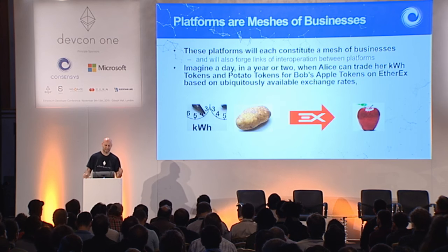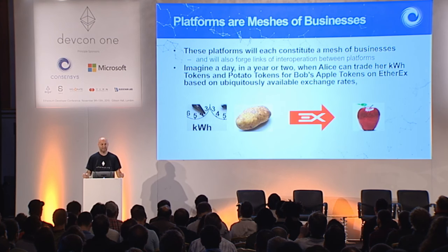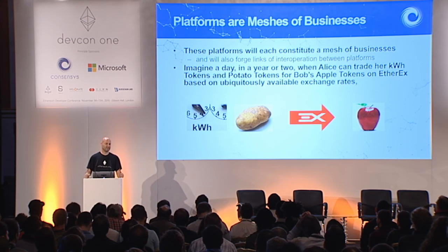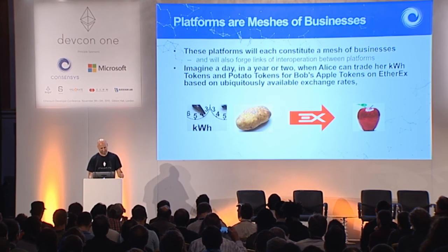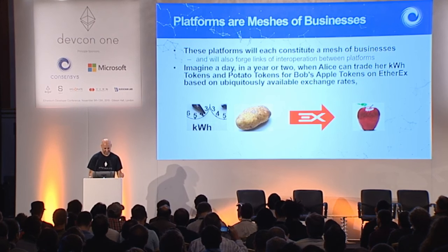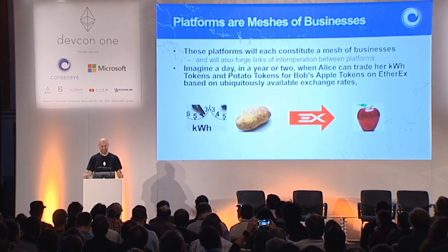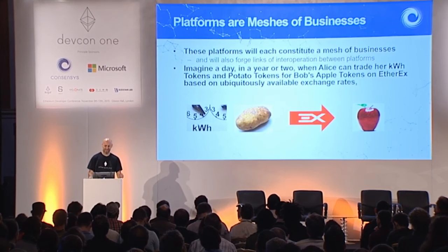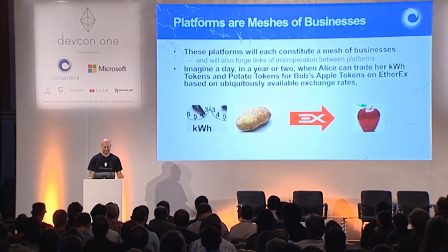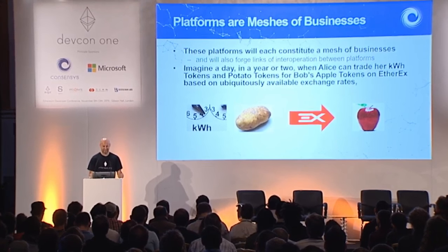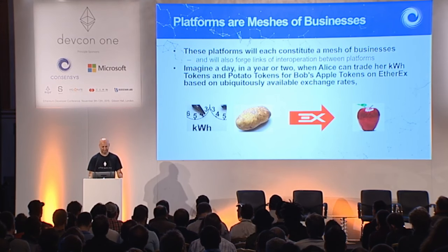These platforms will each constitute meshes of businesses, and these meshes will probably interoperate — there will be overlapping meshes of meshes. So you can imagine in a day or in a year or two, Alice can possibly trade her kilowatt hours and potato tokens for Bob's apple tokens, probably on EtherX.